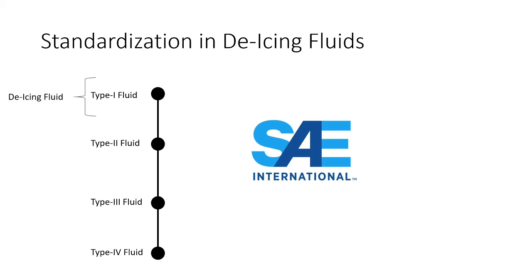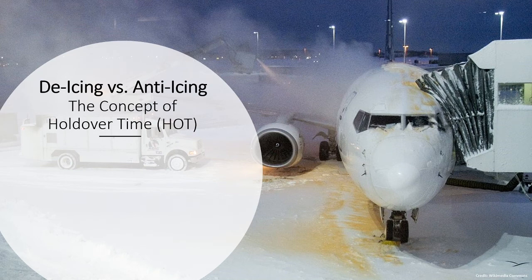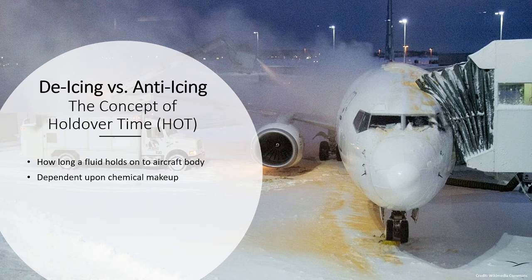To understand the difference between de-icing and anti-icing fluids, we will discuss the concept of hold over time, or simply HOT. It is a simple concept: if you spill water over your head, it will not stay, but if you pour oil over your head, it will stay longer than water. This is the concept of hold over time — how long a fluid used for treating icing on an aircraft holds on to the aircraft body. The hold over time of a fluid depends on its chemical makeup, and viscosity plays a very important role in increasing or decreasing hold over time.